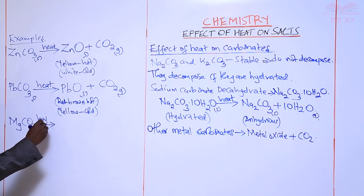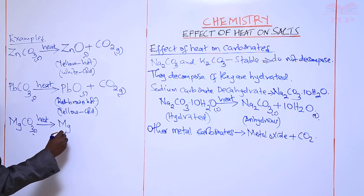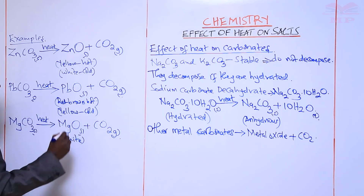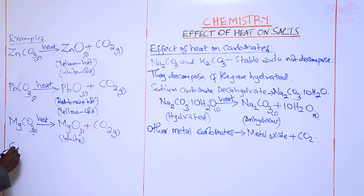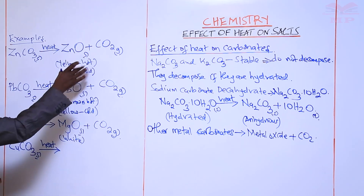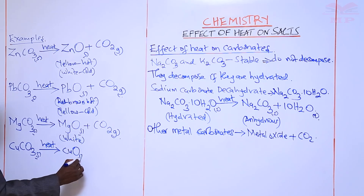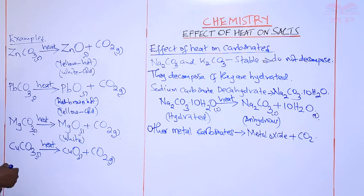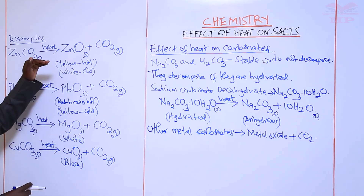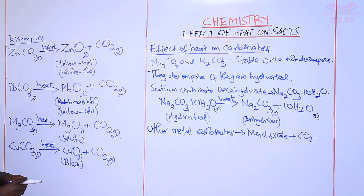Another example is magnesium carbonate: when you decompose it using heat, you get magnesium oxide and carbon dioxide gas. Magnesium oxide is a white solid. When we heat copper carbonate, we get copper oxide and carbon dioxide gas. Copper oxide is black in color. From these four equations, you can see that these metal carbonates decompose to give the corresponding metal oxide and carbon dioxide gas.